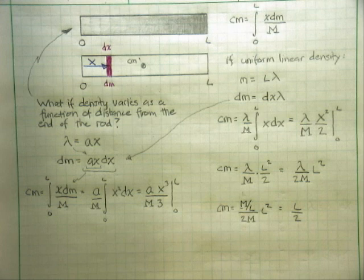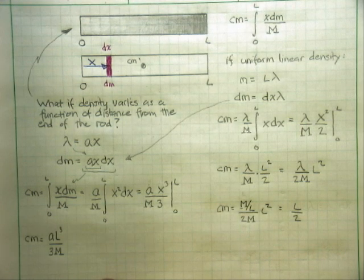We have probably the second function that you ever integrated in a calculus class, x squared dx. That evaluates as ax cubed over M divided by 3. Evaluate that from 0 to L, and we end up with the center of mass is a times the length cubed divided by 3M, which doesn't look too pretty.